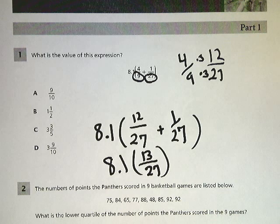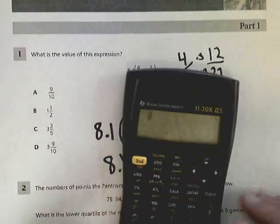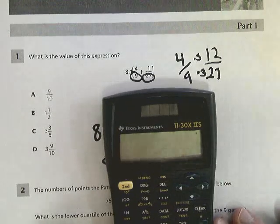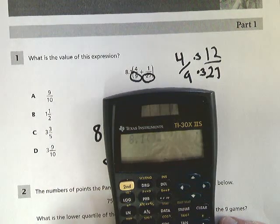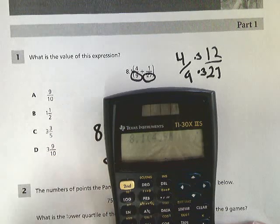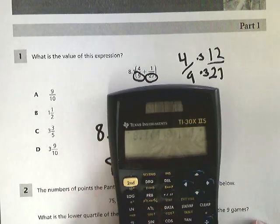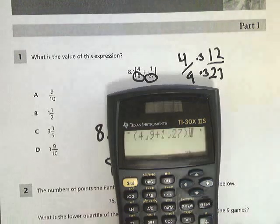Or, like I said before, you could just go ahead and type the entire thing into your calculator, which is probably what you're going to do anyway, right? So 8.1 parentheses 4/9 plus 1/27. Then you want to close that out.